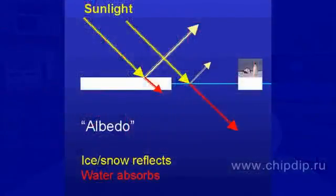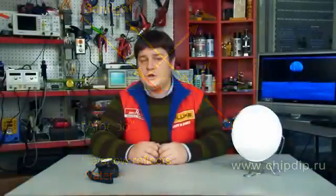There are several types of albedo for the optical range. The true albedo is the ratio of flow scattered by a flat surface in all directions to the flow incident on that surface. Visible albedo is the ratio of surface brightness illuminated by a parallel beam of rays to the brightness of an absolutely white surface.